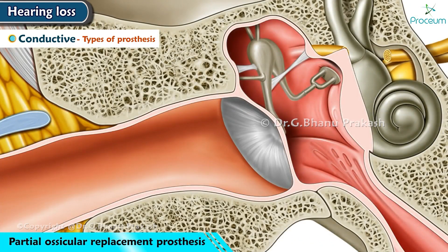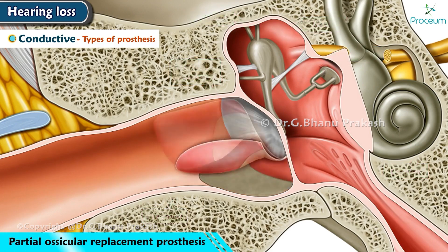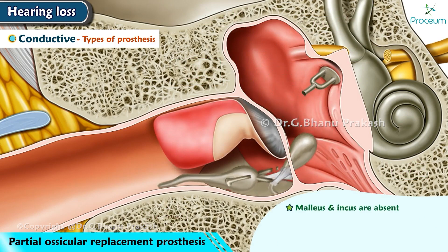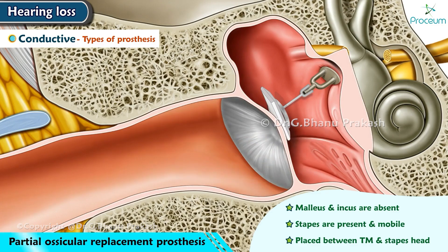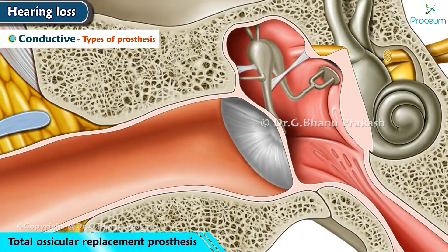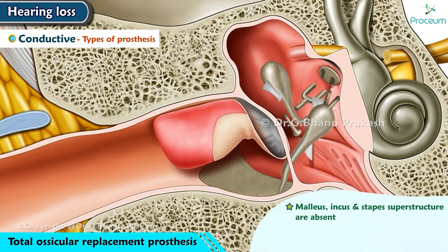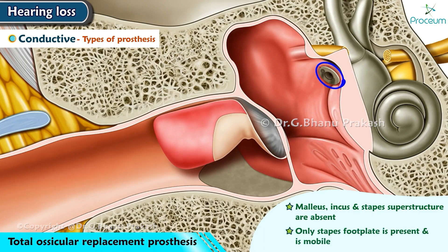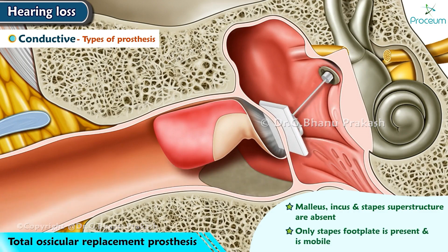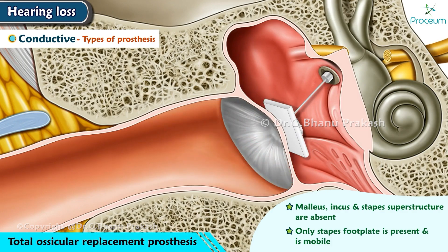The partial ossicular replacement prosthesis (PORP) is used when the malleus and incus are absent but the stapes are present and mobile. It is placed between the tympanic membrane and the stapes head. The total ossicular replacement prosthesis (TORP) is used when the malleus, incus, and stapes superstructure are all absent and only the stapes footplate is present and mobile.